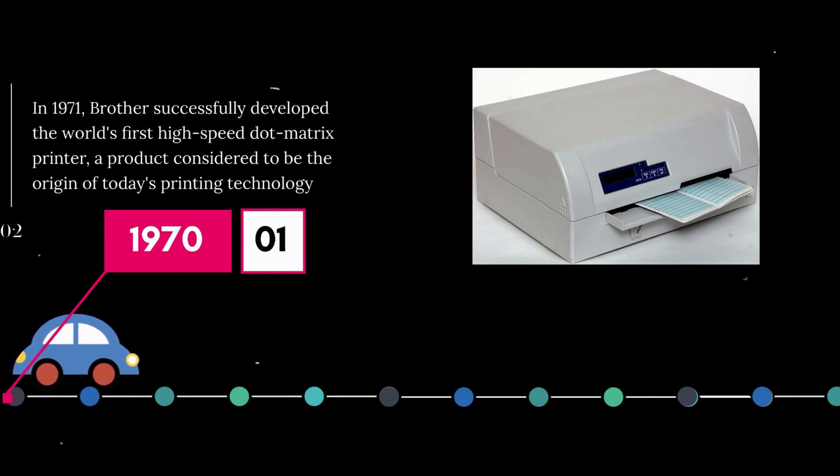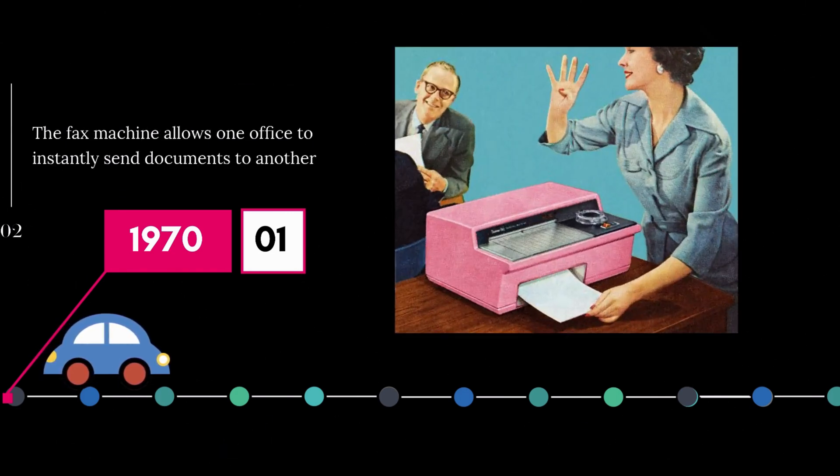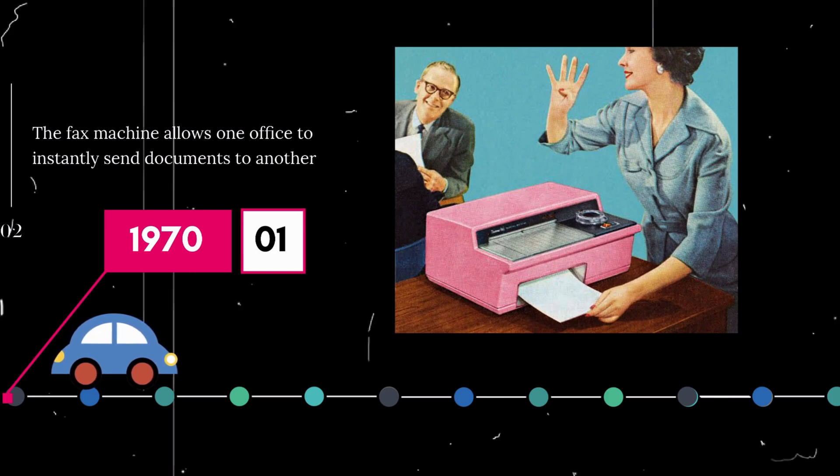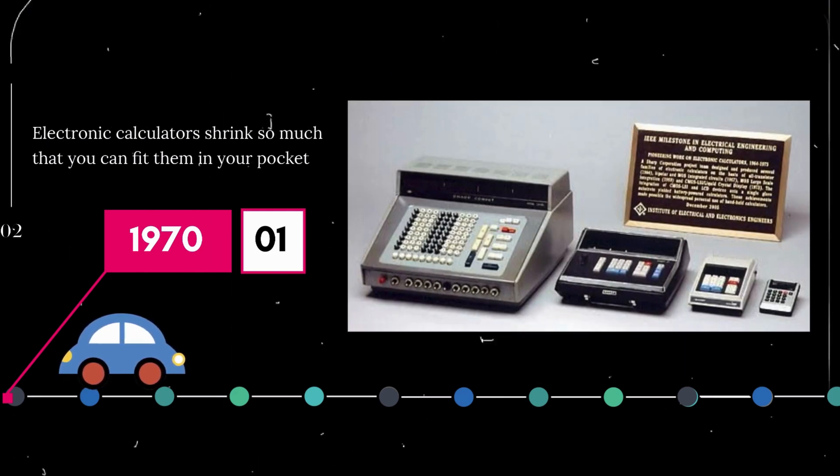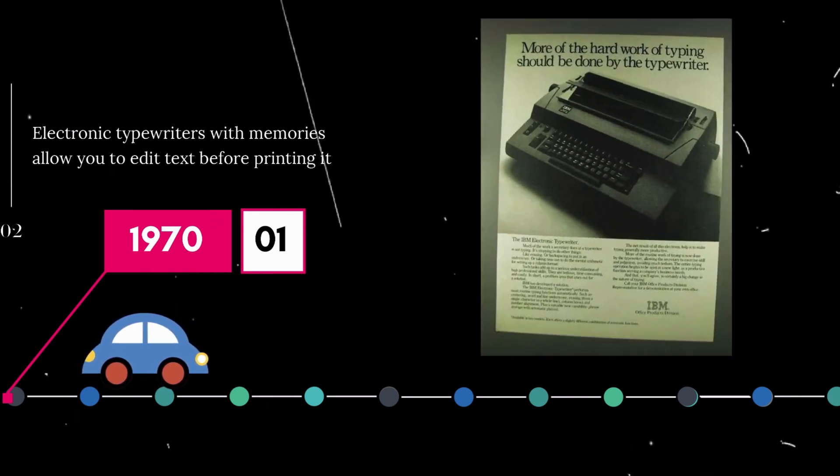Brother launches the world's first high-speed dot matrix printer, the precursor to modern printer technology. Color photocopiers become widespread. The fax machine allows one office to instantly send documents to another. Electronic calculators shrink so much that you can fit them in your pocket. Electronic typewriters with memories allow you to edit text before printing it.